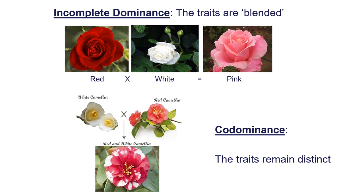In complete dominance, if we have a gene coding for an enzyme, having at least one working version is enough. But in this case, having only one functional gene doesn't give us enough enzyme to get the full red color — so we get something halfway in between. That's incomplete dominance, where things are blended. In codominance, we see both traits — the recessive and the dominant — but they're not blended; they're separate. You can see the flower at the bottom has separate bits of white and separate bits of red, just like that cow.